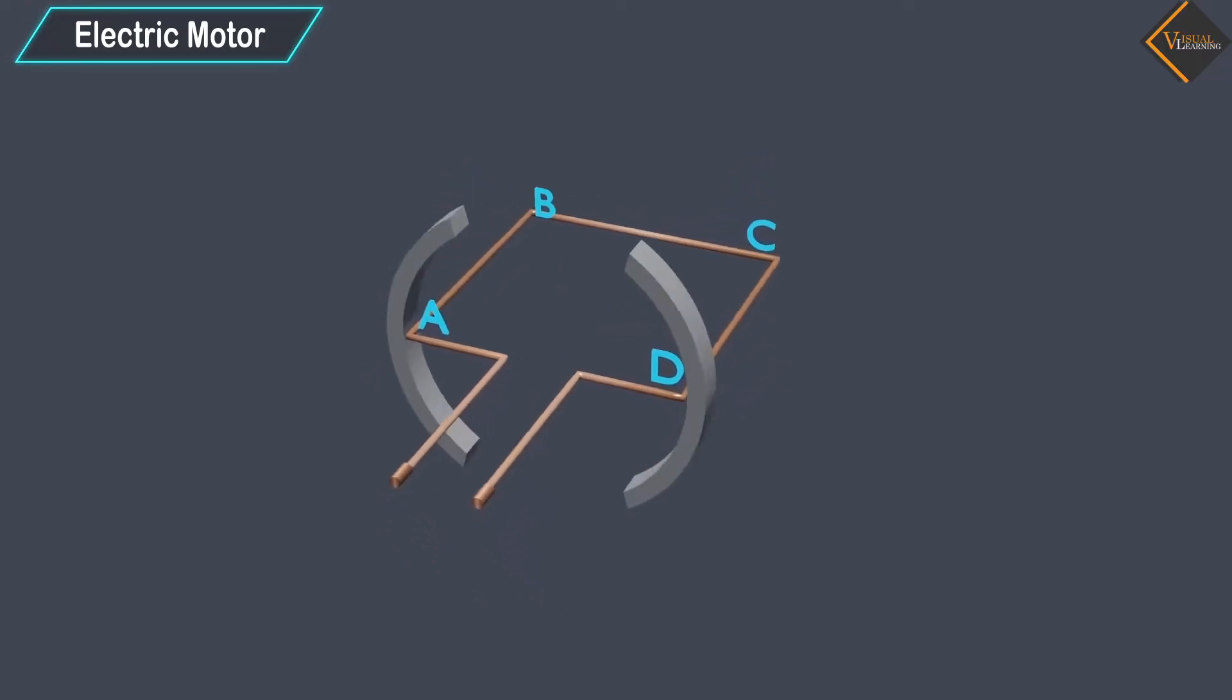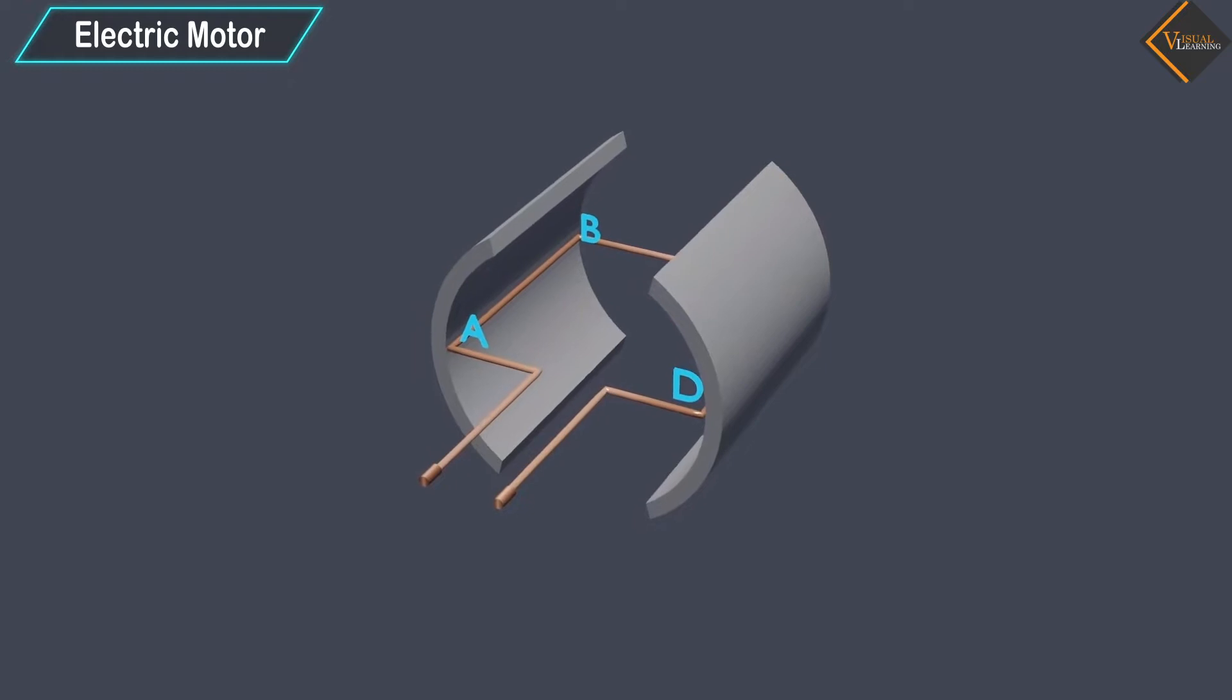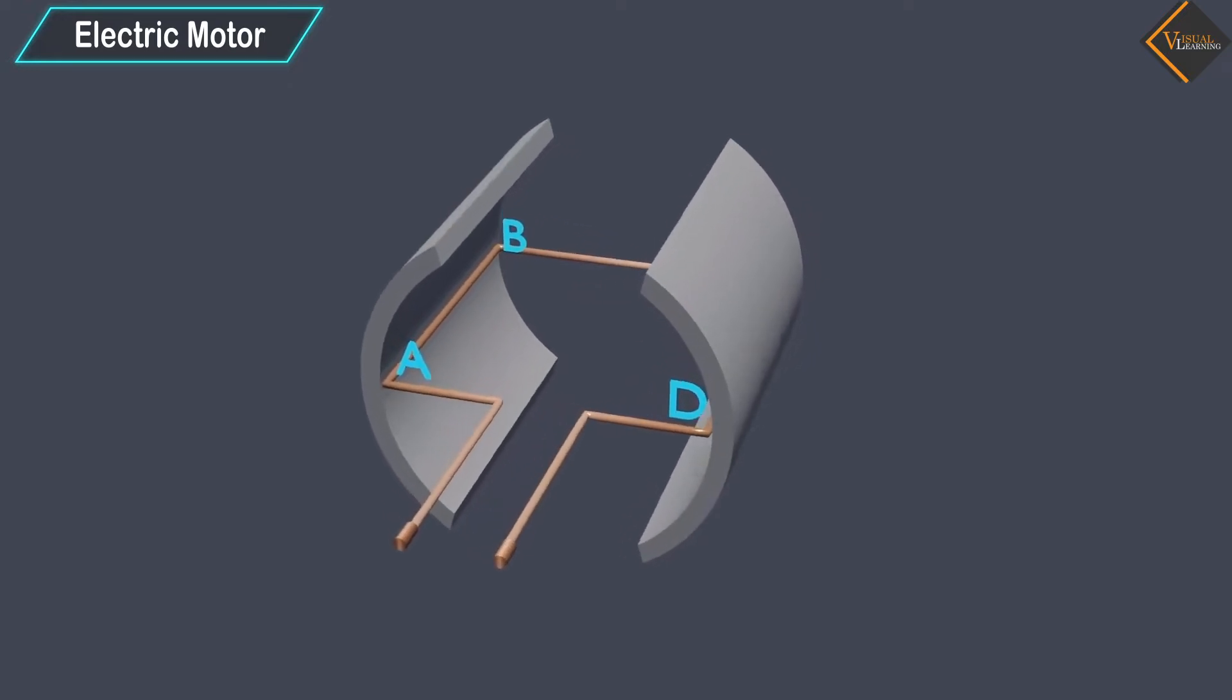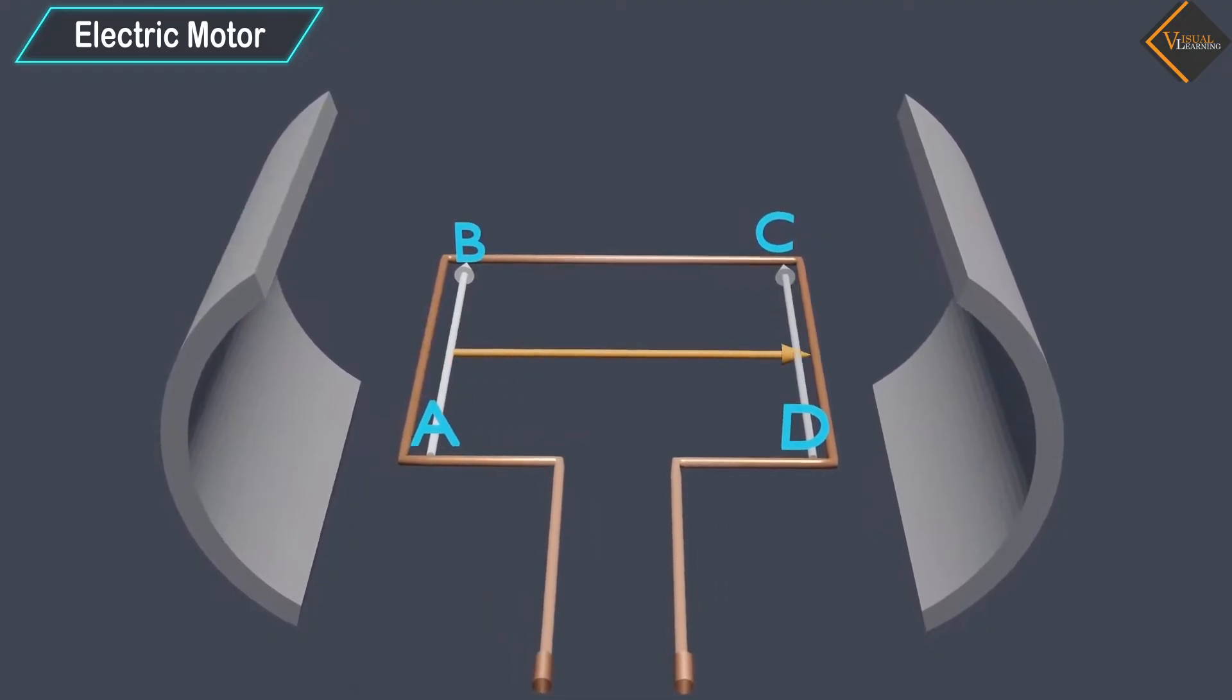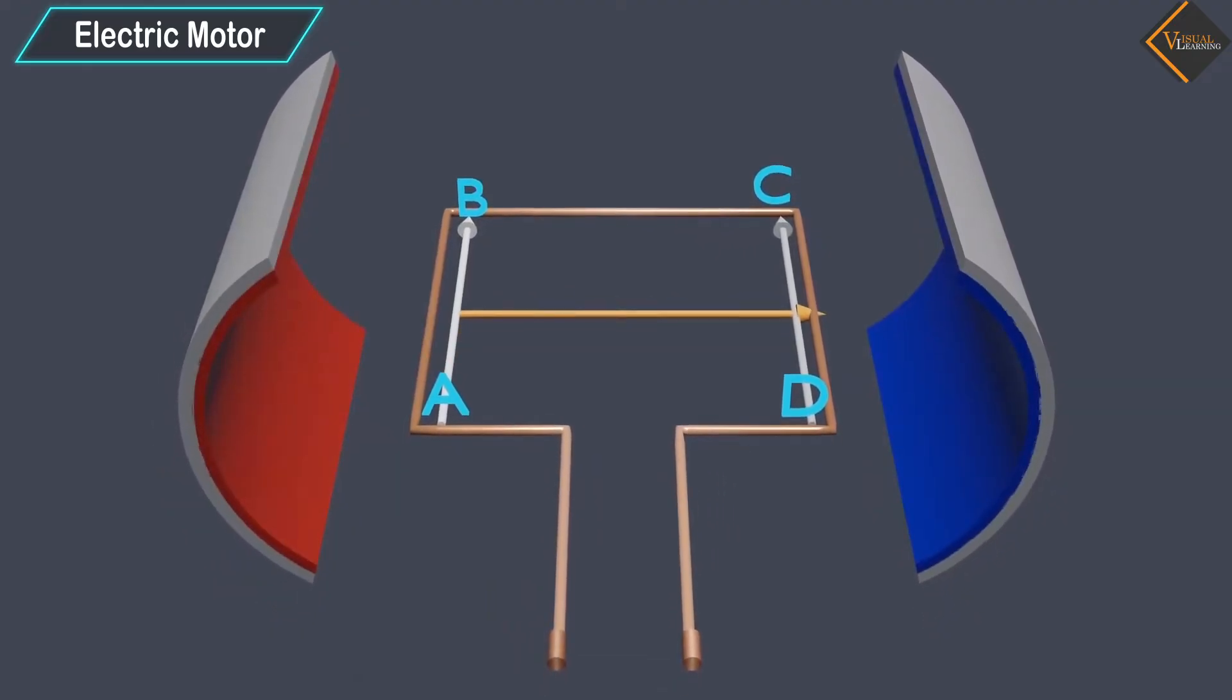The coil is placed between the two poles of a magnetic field such that the arms A, B and C, D are perpendicular to the direction of the magnetic field.